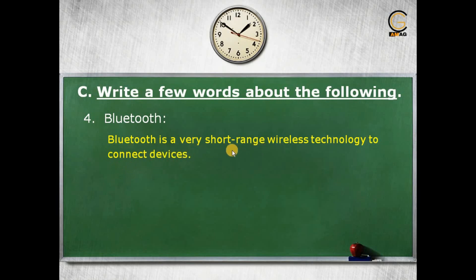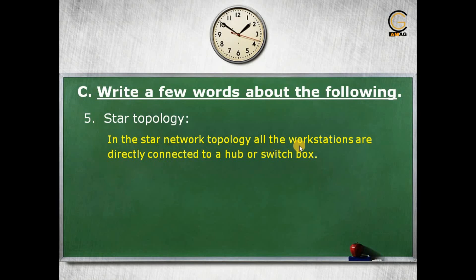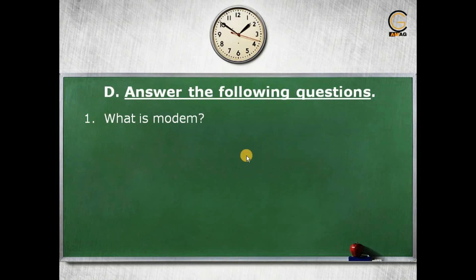Next, write about Bluetooth. Bluetooth covers a very short range; it is a wireless technology used to connect devices. Next, write about star topology. In the star network topology, all the nodes — also called workstations — are directly connected to a hub or switch box. The computers are not connected directly to each other, but through a hub or switch box.